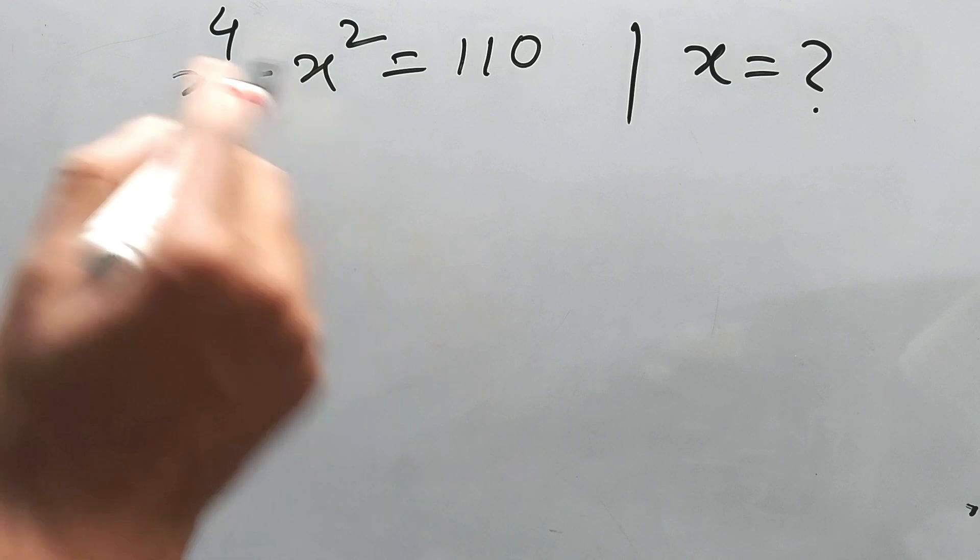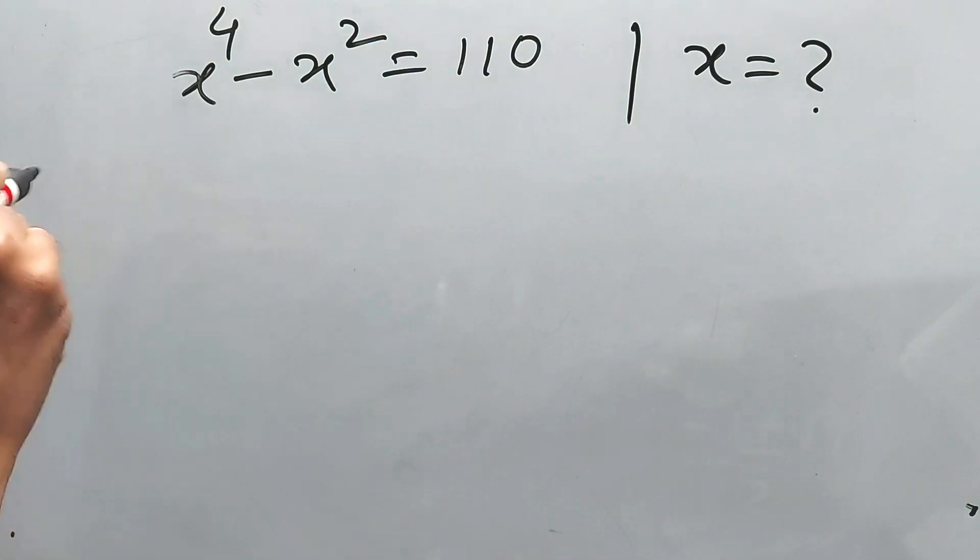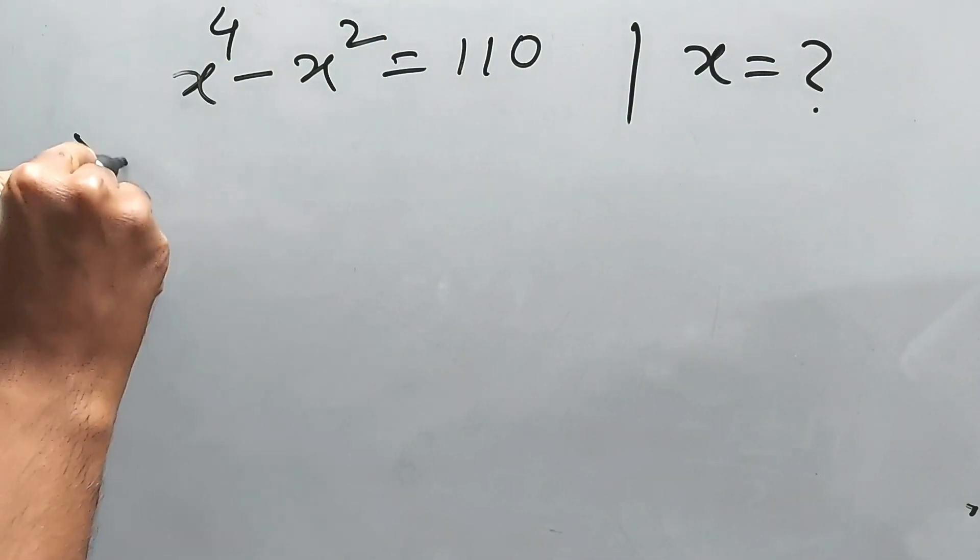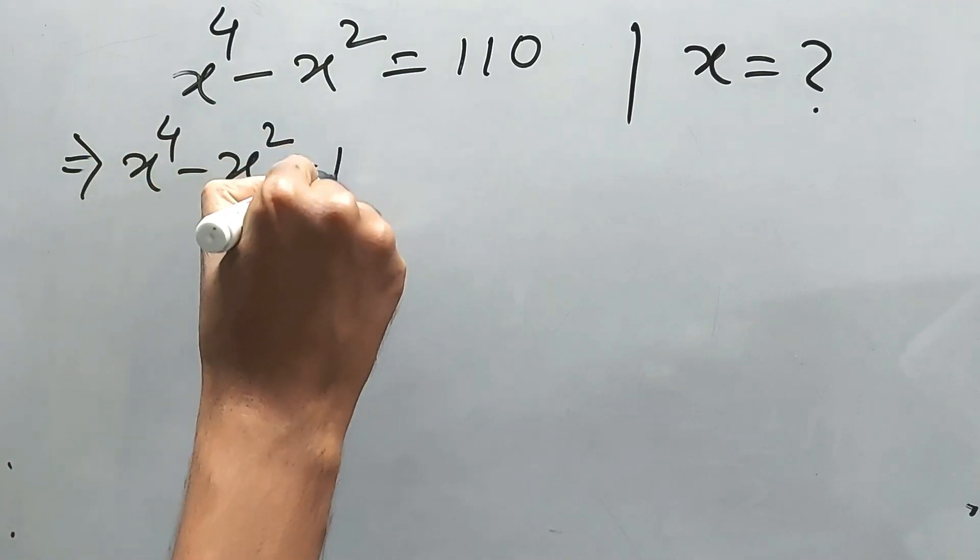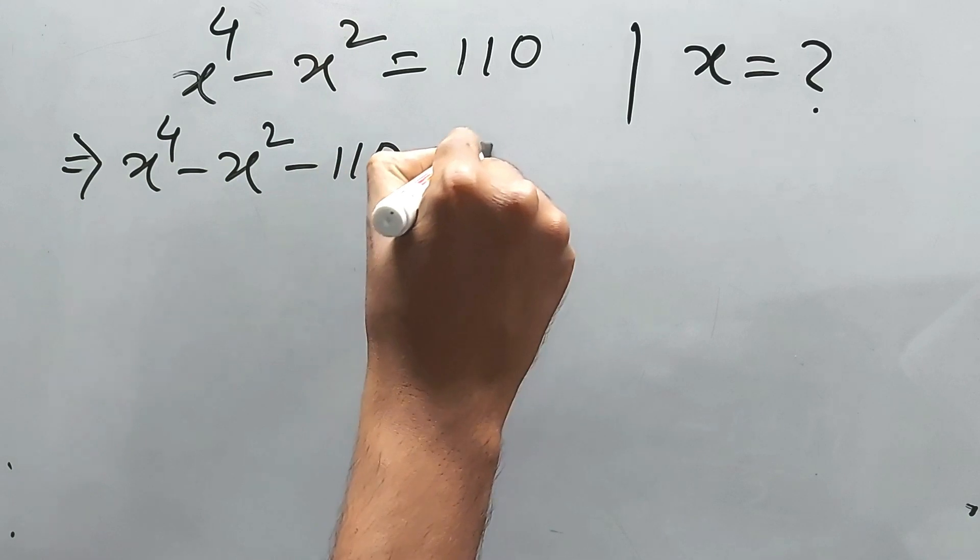Again, I'll tell you, stop, try it by yourself. What is the basic step? We have to take everything to one side. That means x to the power 4 minus x squared minus 110 is equal to 0.